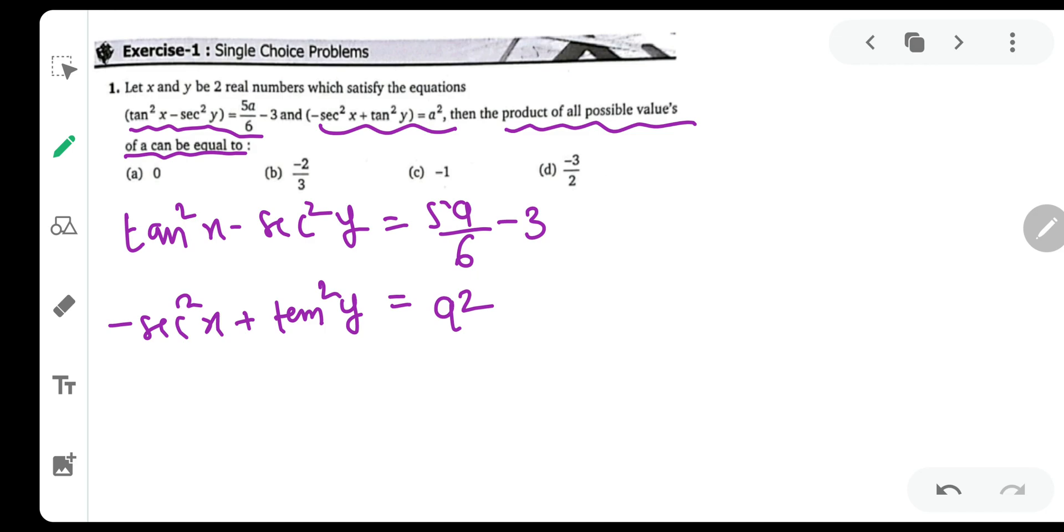Okay, very simple. Tan square and sec square are introduced over here, so we will use this identity: tan square theta plus 1 is equal to sec square theta. That's it, very simple identity.